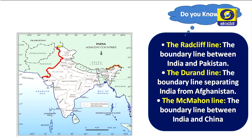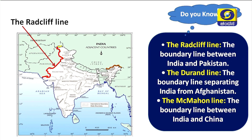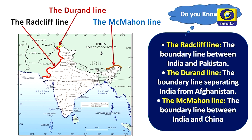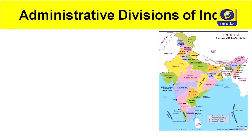The boundary line between India and Pakistan is called the Radcliffe Line. The boundary line separating India from Afghanistan is the Durand Line. And the boundary line between India and China is the McMahon Line.